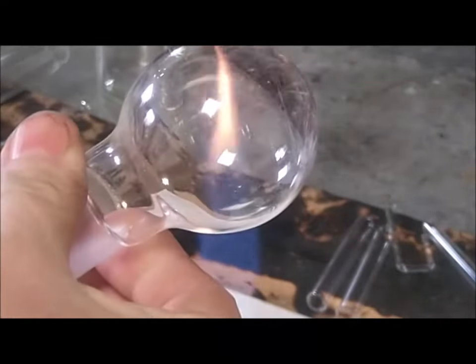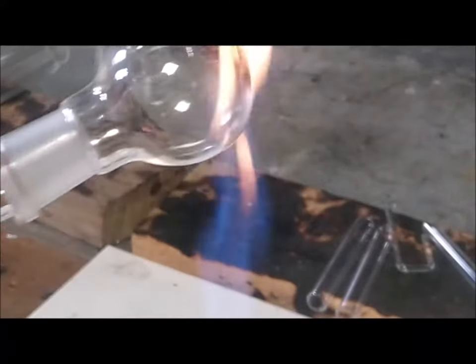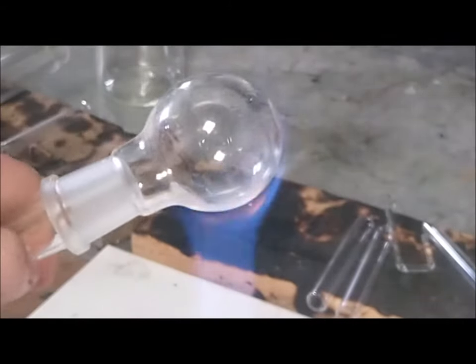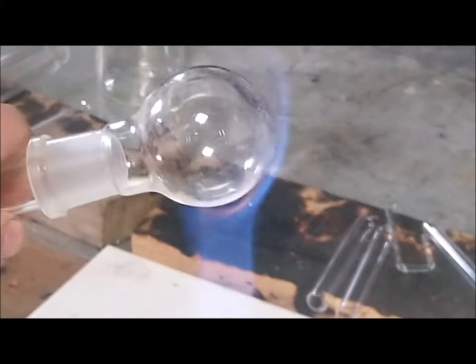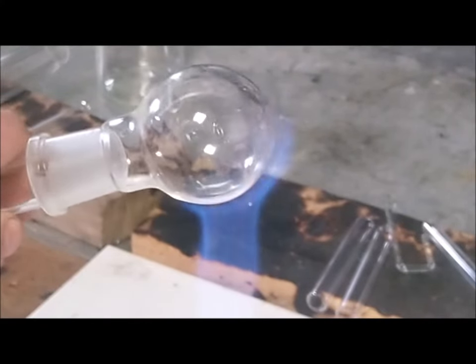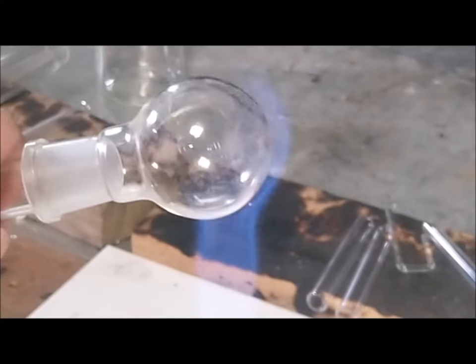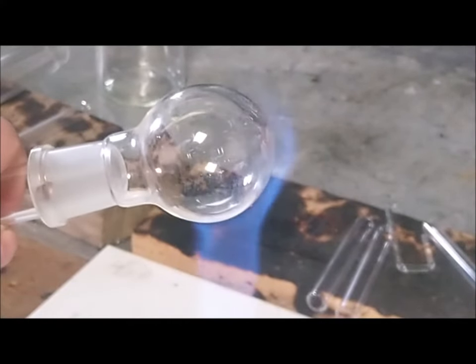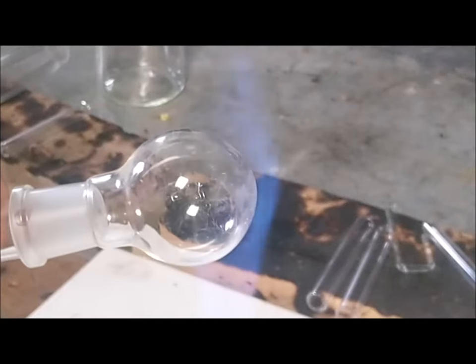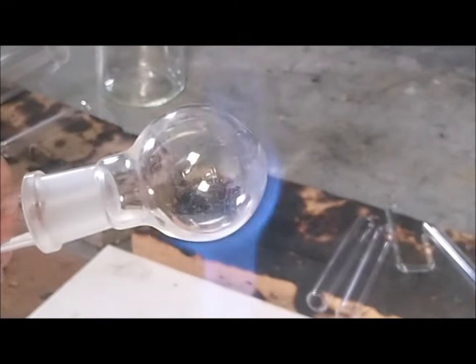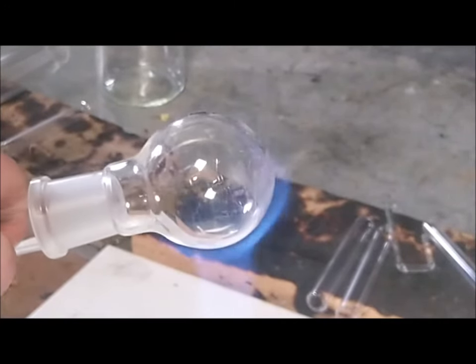the reason we use a Bunsen is you want even heat all the way over the crack all around the glass, everything has to come up to pretty good temperature and that way when I do bring the torch back into it and try and melt the glass it's not going to push the glass open and make the crack get worse